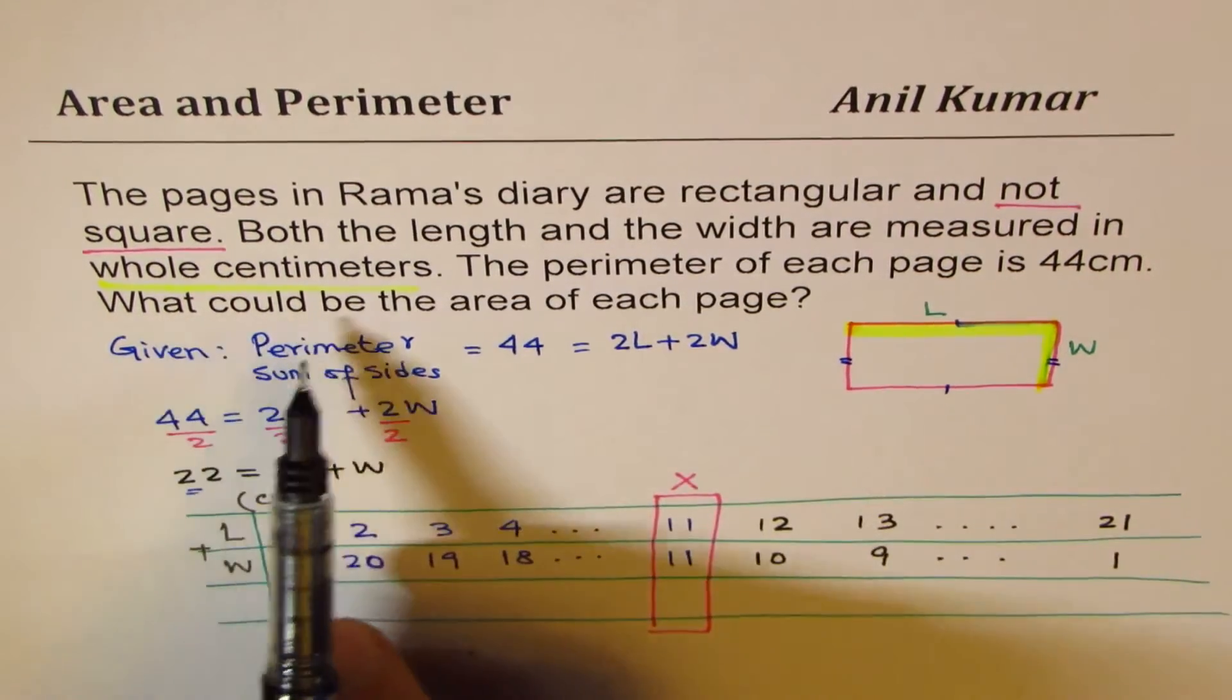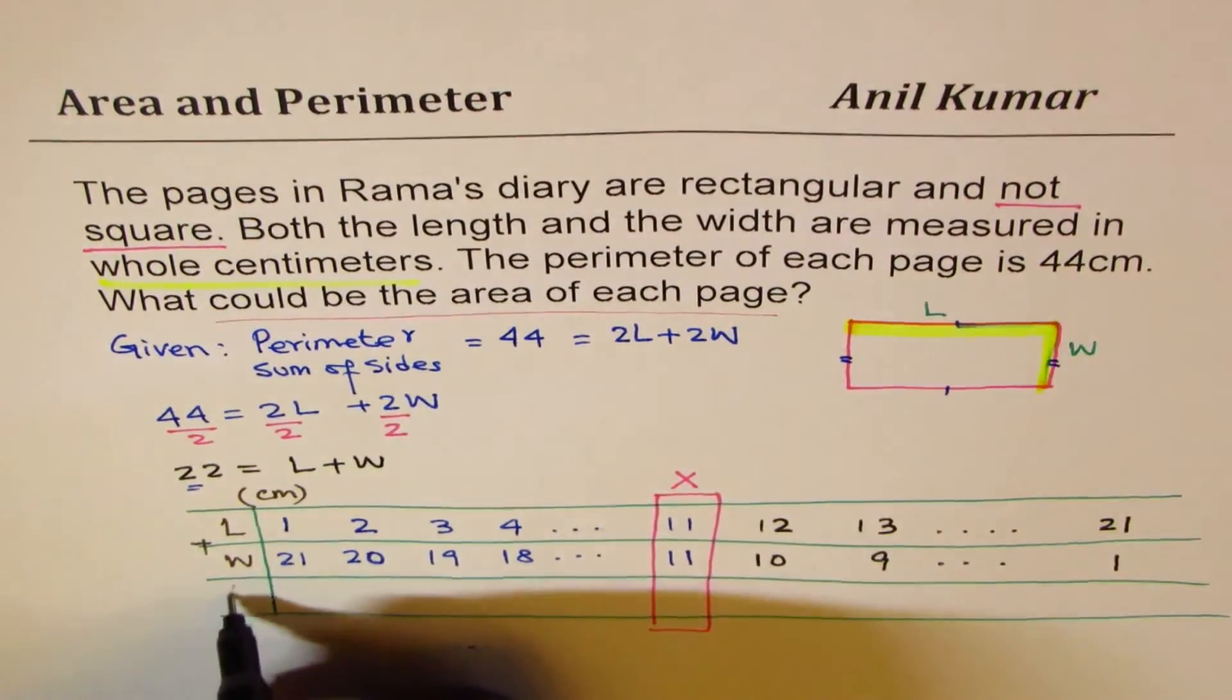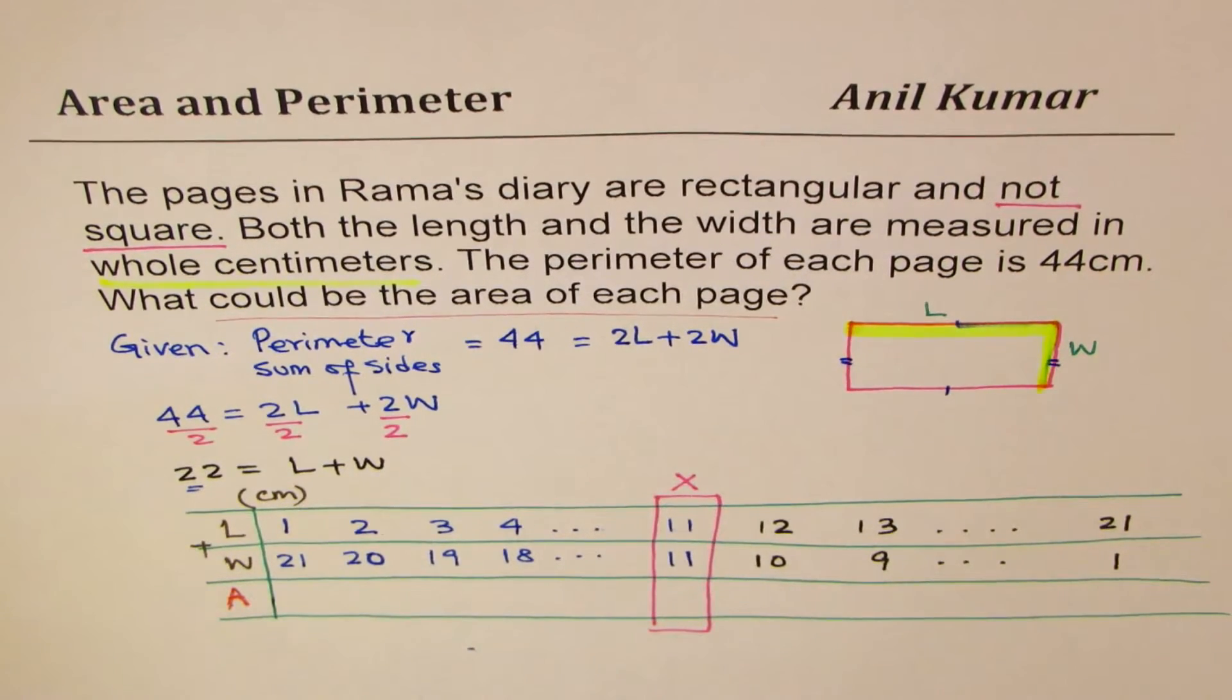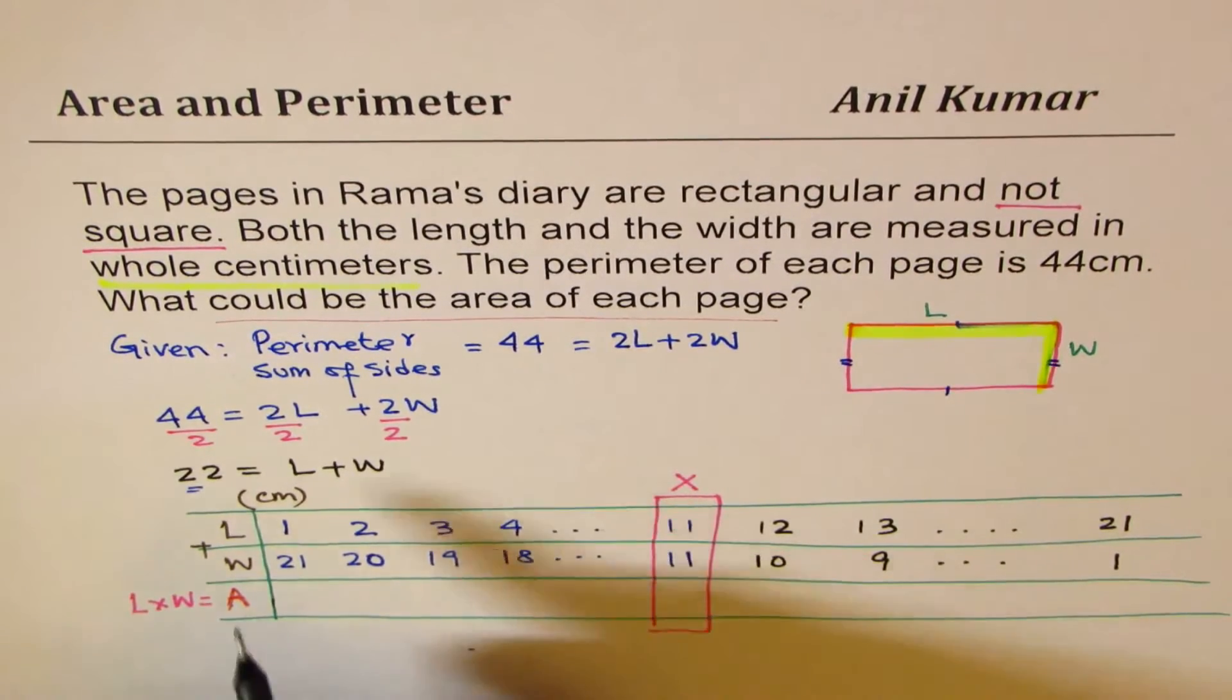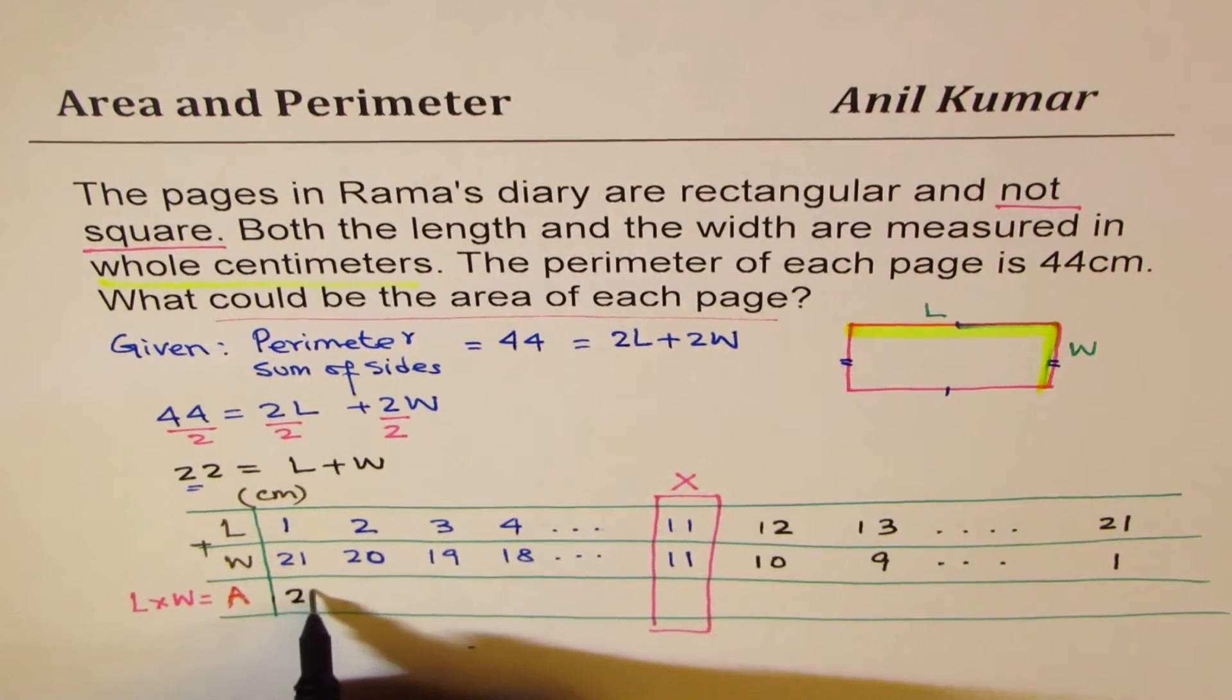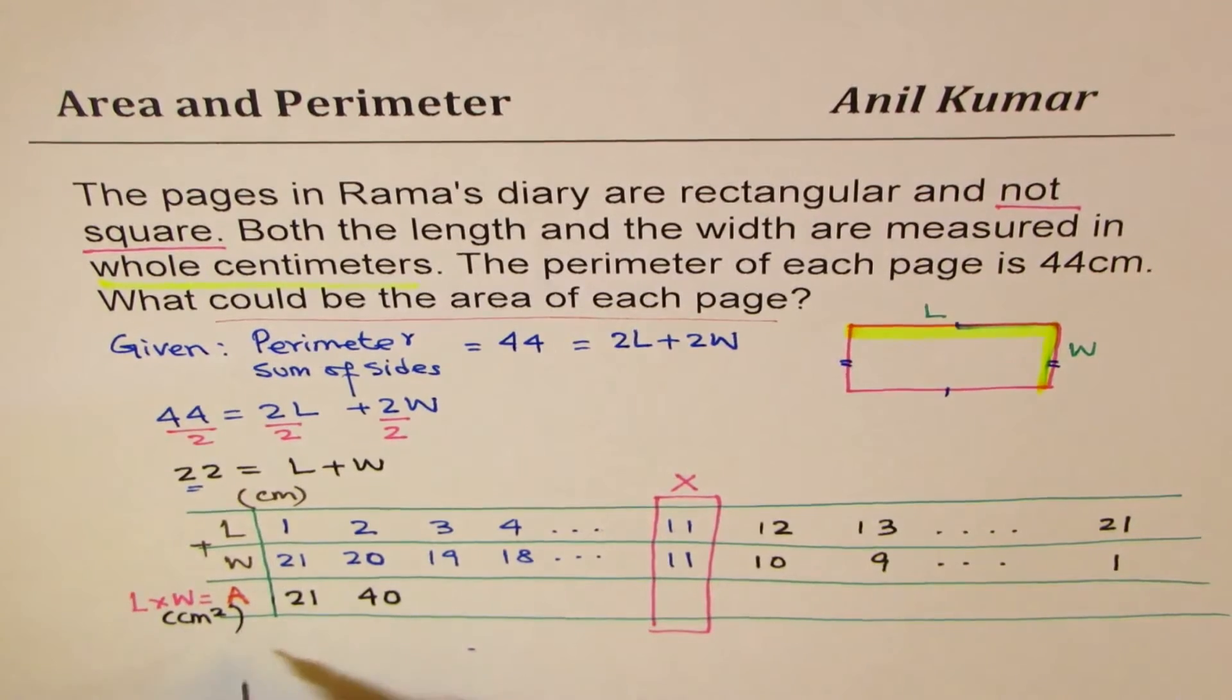Now what do we need? What could be the area? We are looking for area. So what could be the area? What is area? Area is product of length and width. That is length times width equals to area. So now we should multiply these two. When I multiply these two, 21 times 1 is 21. 20 times 2 is 40. Remember, the area will be in centimeters squared. So write down your units.